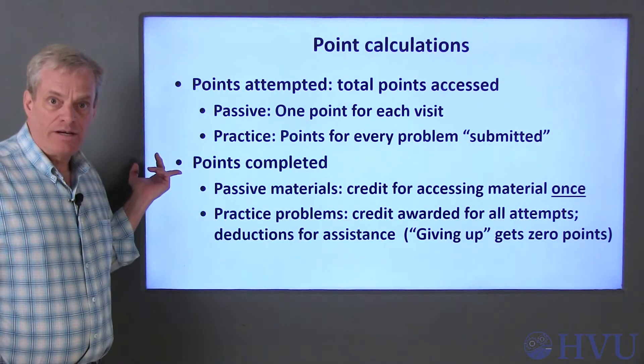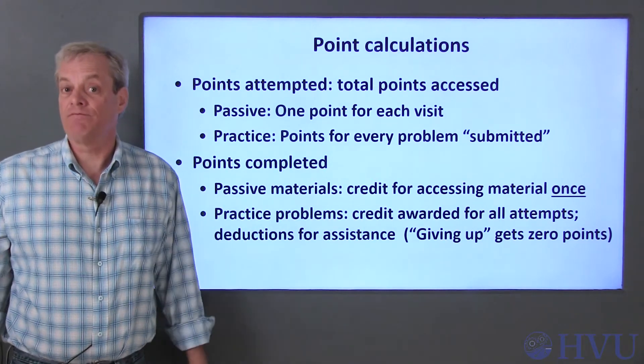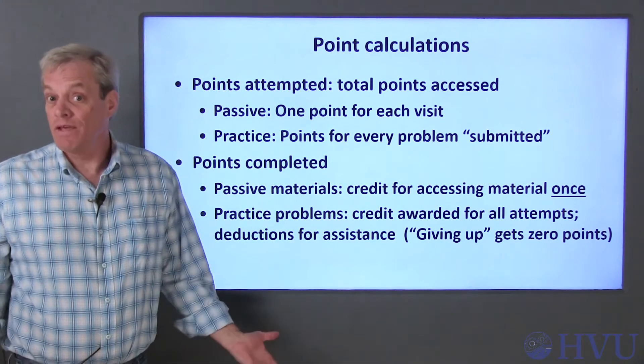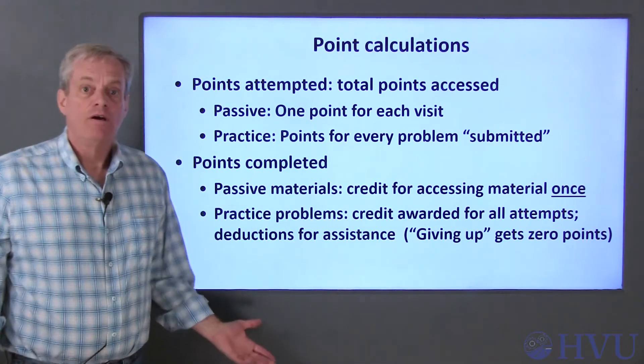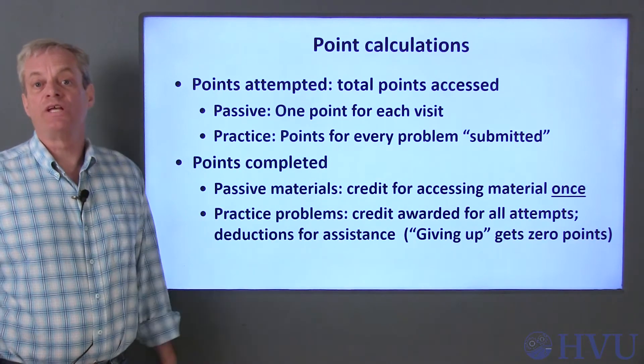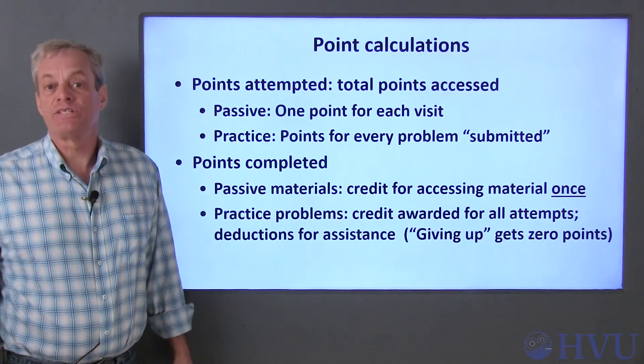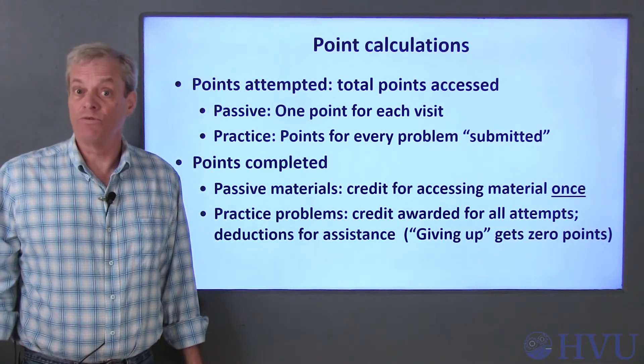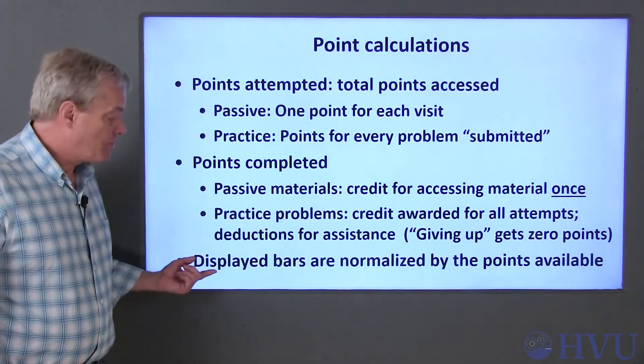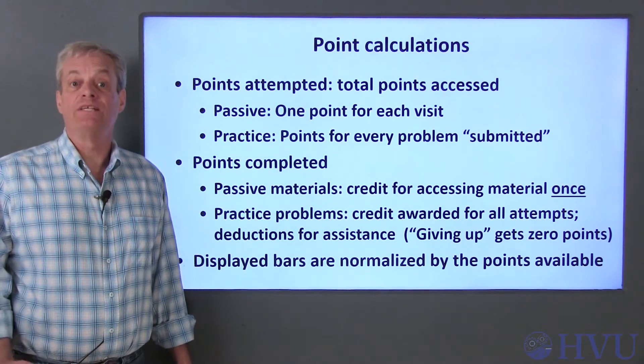The points completed are calculated as follows. Students get credit for only one visit to each passive link. So if a student views a lecture video ten times, they only receive one point. For practice problems, the points completed include all points associated with every correct answer the student submits. There are, however, some deductions for assistance the student receives, which I'll talk about in the next slide. The progress bar lengths are normalized by the total number of points available.